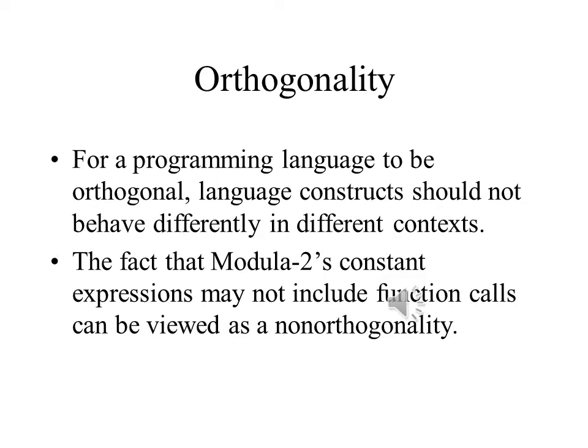Orthogonality means that we can combine a small set of primitive constructs to create the control and data structures of a language, and that whatever possible combinations of primitives we wish to use are legal and meaningful. It also means that a language feature is independent of where we use it. Non-orthogonalities lead to a large number of exceptions to the rules of a programming language, and that makes it harder to make sense of a program.